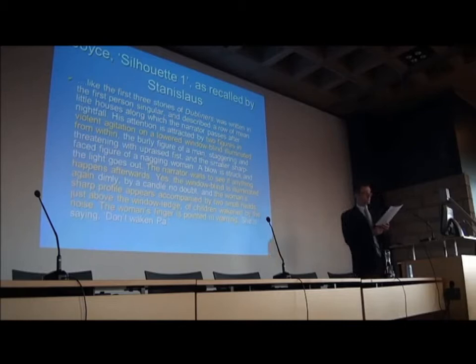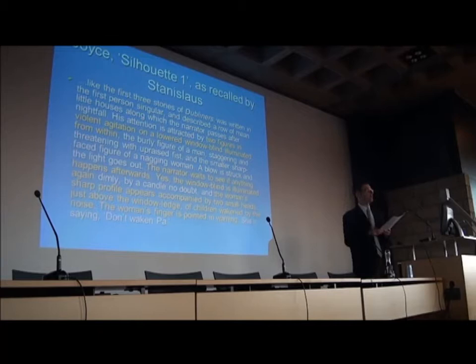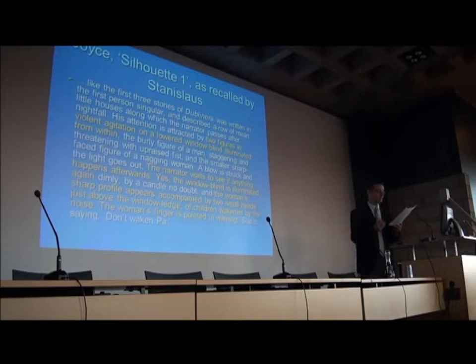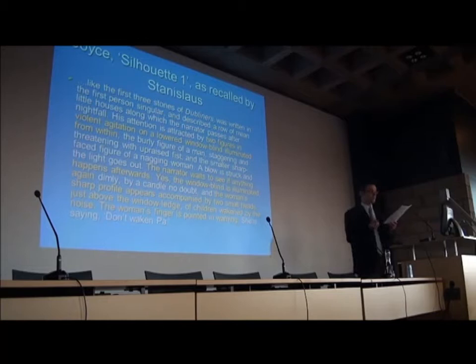The light goes out. The narrator waits; then the window blind is illuminated again, dimly by a candle, and the woman's sharp profile appears accompanied by two small heads just above the window ledge of children wakened by noise. The woman's finger is pointed in warning — she's saying, don't waken par. By having his narrator watch a private altercation publicly projected against a nighttime blind, the young Joyce was self-consciously rendering the sketch's action as a series of moving images in a shadowgraphic, dumb-show-like display.